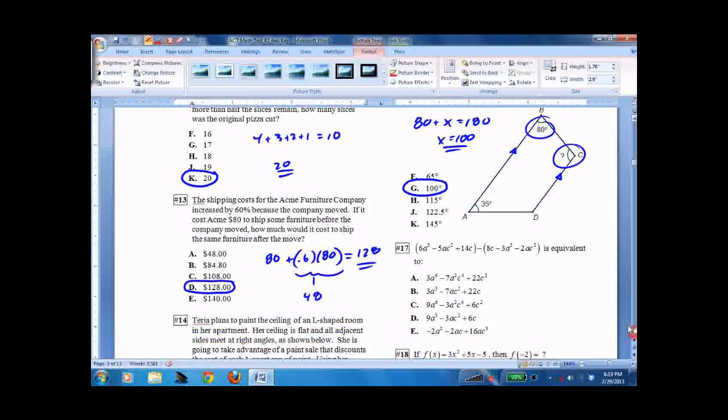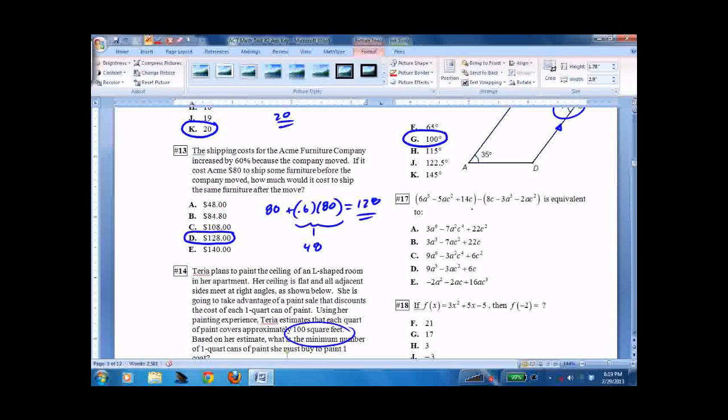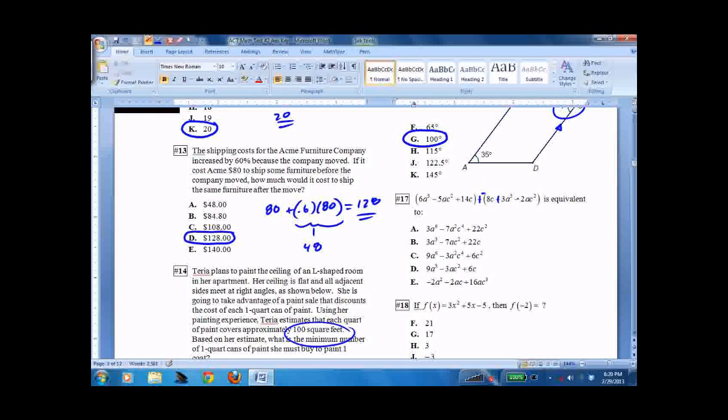17 is what we call combining like terms. Whenever I see a problem like this, and I really need my color back, I'm going to shut this down and try and get it back. Can't get it back. Plus, negative, plus, plus. Can distribute that negative immediately. So 6a to the third plus 3a to the third is 9a to the third. Negative 5ac plus 2ac is minus 3ac squared. And 14c minus 8c is plus 6c. And that would be this one here.